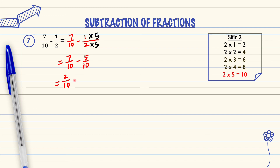In the 2 times table, 2 and 10 are in the answer: 2 times 1 equals 2, 2 times 5 equals 10. So 2 over 10 will be divided using the 2 times table.